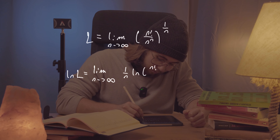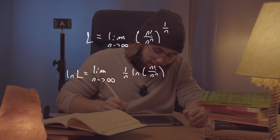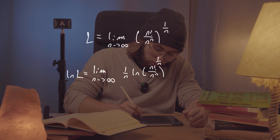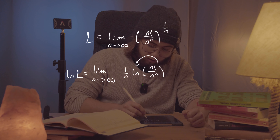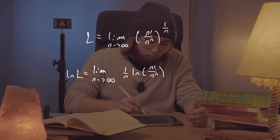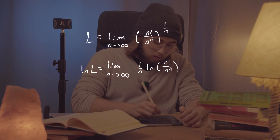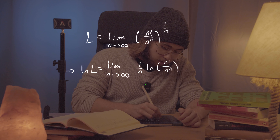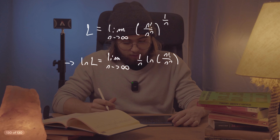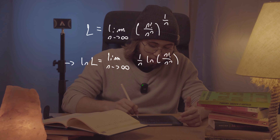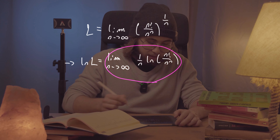It's going to be one over n times the natural log of n factorial over n to the n. I just brought the one over n from the exponent out in front of the natural log, which is valid by the properties of logarithms.